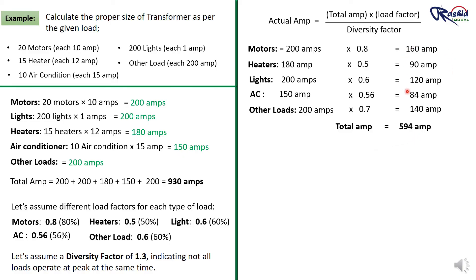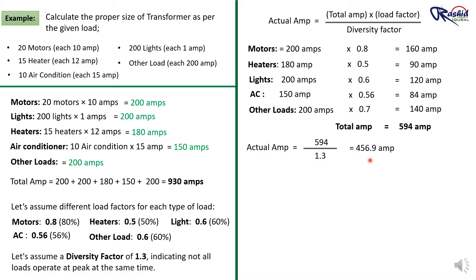This 594 Ampere is the total with load factor applied. Now we divide by the diversity factor: Actual Ampere = 594 ÷ 1.3 = 456.9 Ampere. So 456.9 Ampere is the actual ampere the transformer must handle.